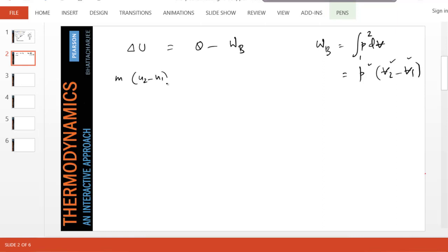And Q minus Wb is what? Pressure times V2 minus V1, correct? This is the boundary work.